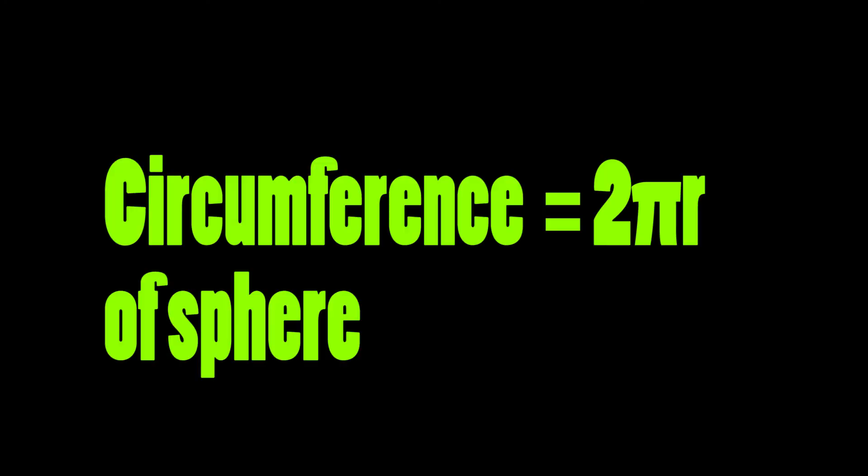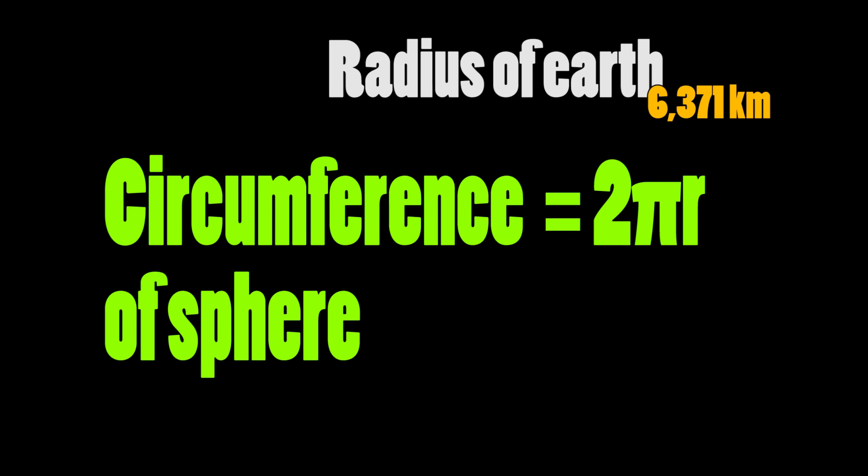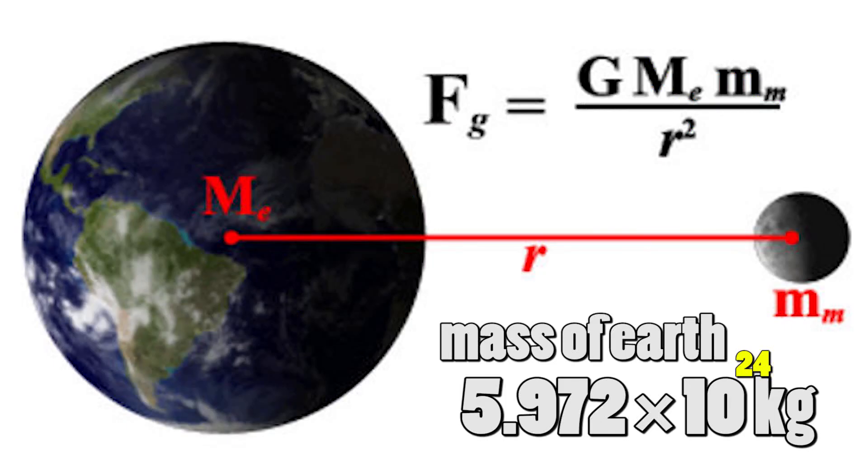And if we know the radius of earth, we can again use this formula to get the mass of earth. And if you want to know more about universal gravitational constant, you can see our previous video, how it was first calculated.